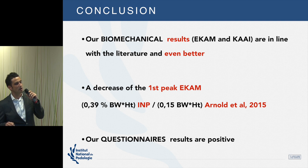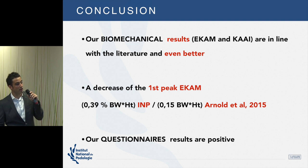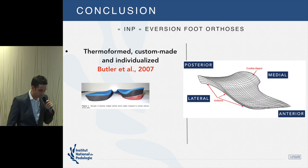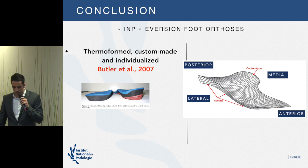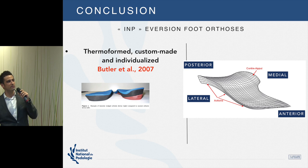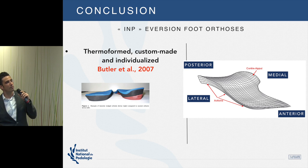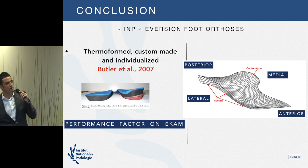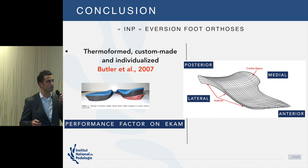Arnold et al. found a 0.15 percent body weight times height reduction, whereas we found 0.39 percent — a substantial difference. To explain this, we reviewed the literature and identified four characteristics. The first is that thermoform custom-made individualized foot orthoses have been proven to yield better results on the EKAM biomechanical criterion compared to non-custom-made orthoses.